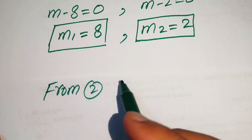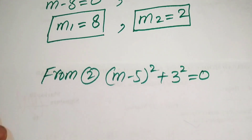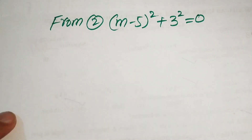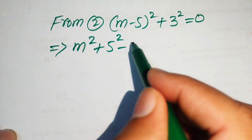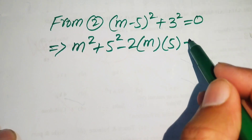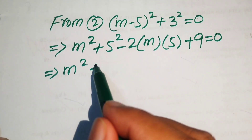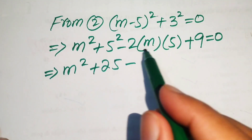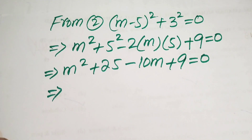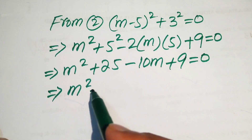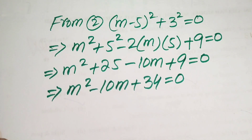From equation 2, (m minus 5)² plus 9 equals 0. Expanding (m minus 5)² gives m² minus 10m plus 25, so the equation becomes m² minus 10m plus 25 plus 9 equals 0, which simplifies to m² minus 10m plus 34 equals 0.